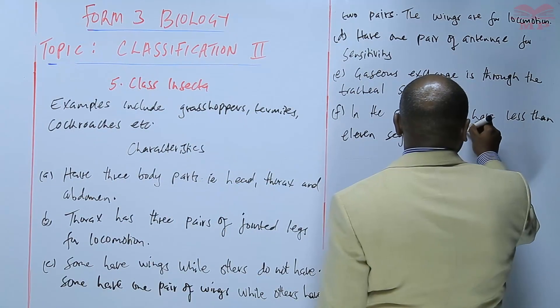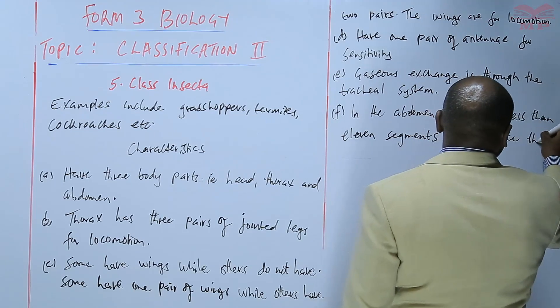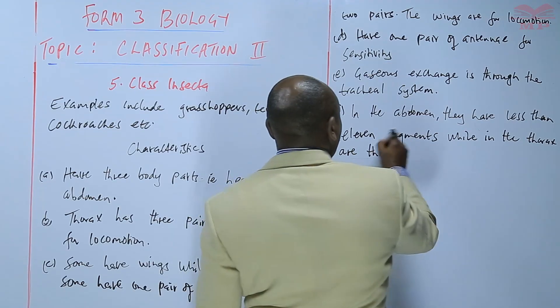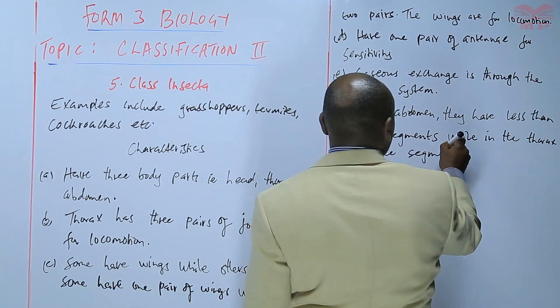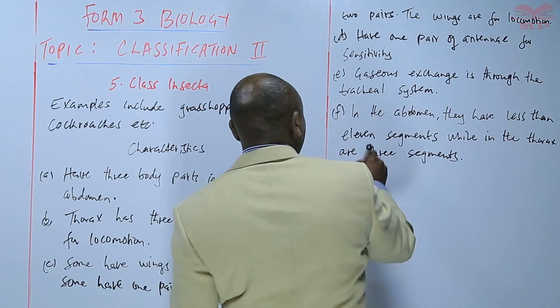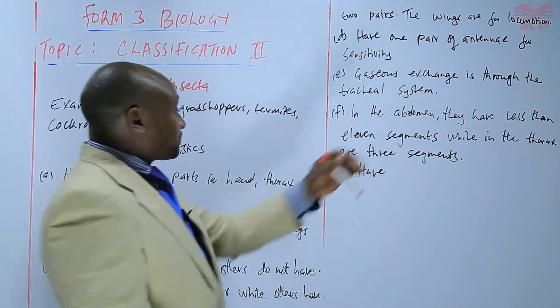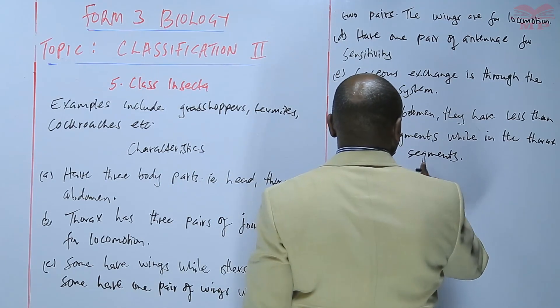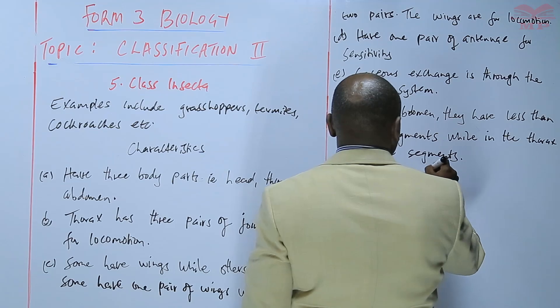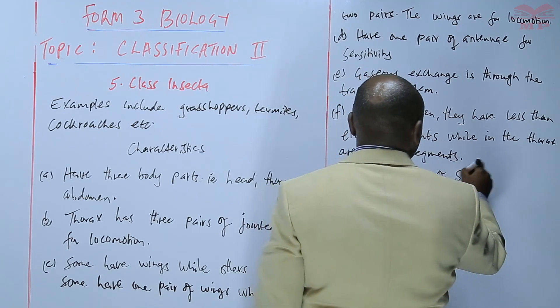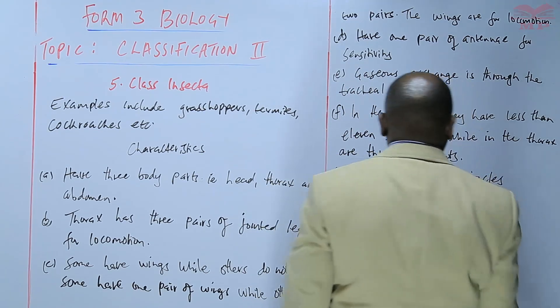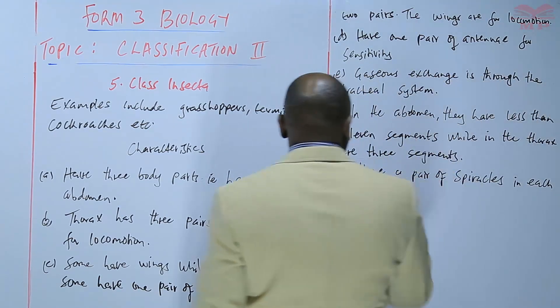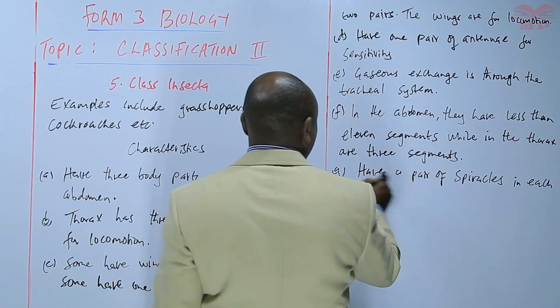They have less than eleven segments in the abdomen, while in the thorax there are three. The thorax has three segments.